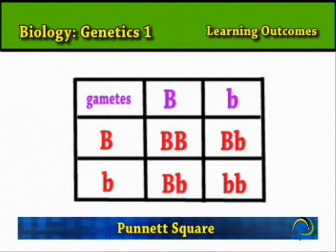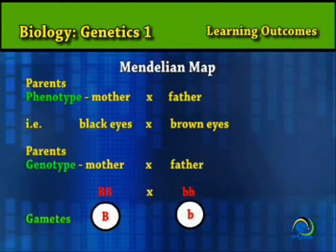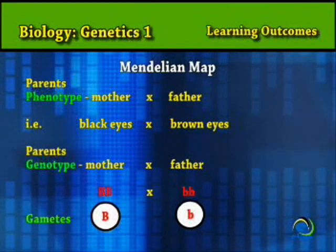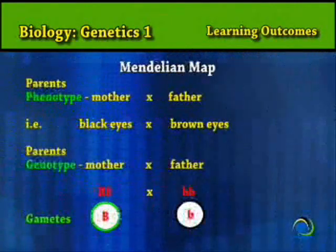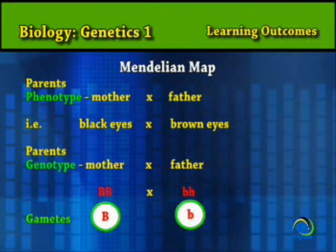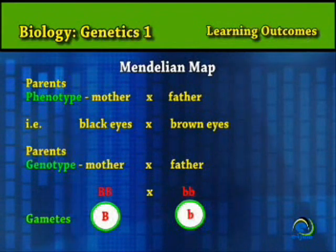Note that the way in which the genotype is expressed is its phenotype. In the example shown, mice with the genotypes BB or Bb will have the phenotype black eye color. BB represents homozygous dominant while Bb represents heterozygous dominant. The genotype bb represents the homozygous recessive trait.